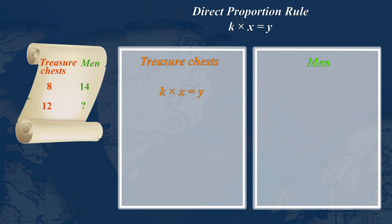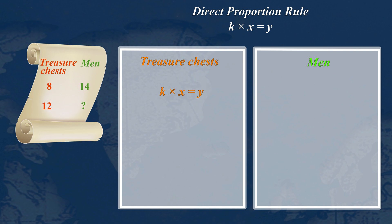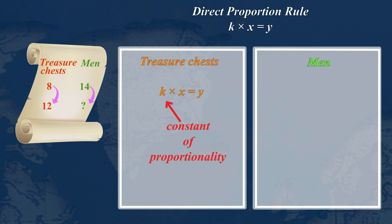First, let's consider the increase of the treasure chests. X is 8 chests and Y is 12 chests. The rate at which both quantities increase is called the constant of proportionality — we use the letter K for the constant of proportionality. Right now K is an unknown number, so we'll have to work it out.